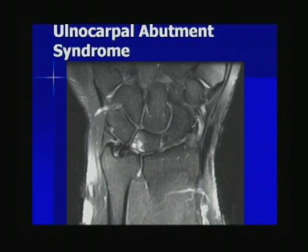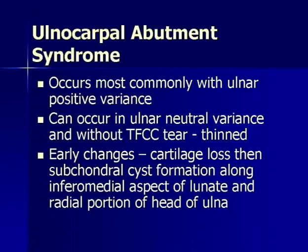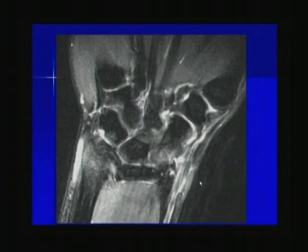Another example shows a central TFCC tear with edema and early subchondral cyst formation within the ulnar aspect of the lunate, as well as chondromalacia along the lunate — consistent with ulnocarpal abutment syndrome. It occurs most commonly with ulnar positive variance, but it's important to remember it can occur with neutral variance and even without a TFCC tear as long as the TFC is very thinned. Early changes are cartilage loss and subchondral cyst formation, usually along the inferomedial lunate and radial portion of the ulnar head. In this example, the edema is more in the ulnar head rather than the lunate, with chondromalacia along both the lunate and triquetrum.